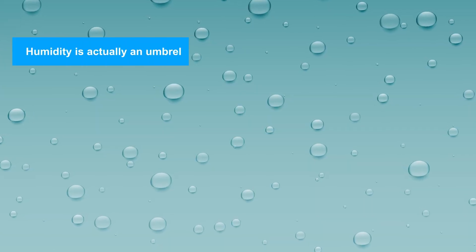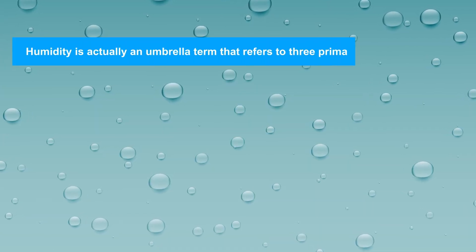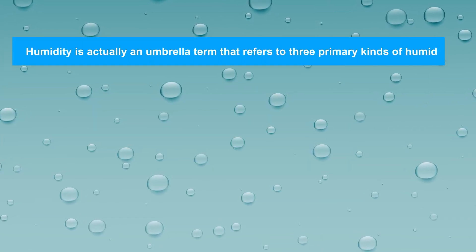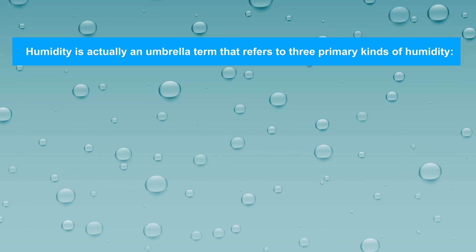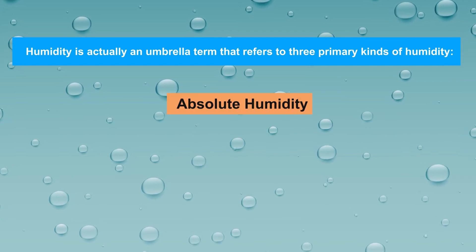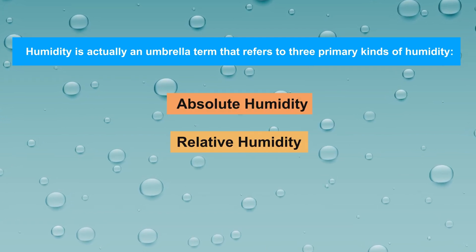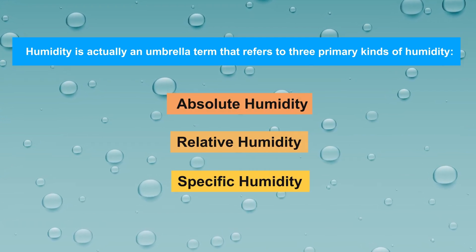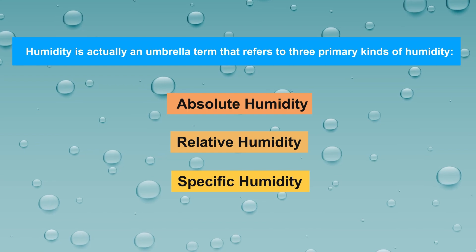It's important to note that humidity is actually an umbrella term that refers to three primary kinds of humidity: absolute humidity, relative humidity, and specific humidity.